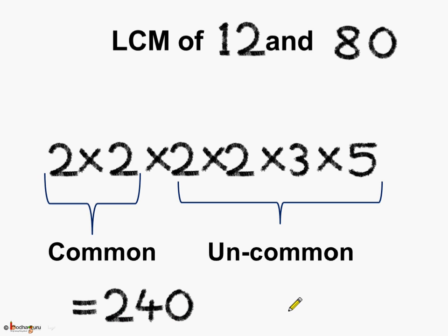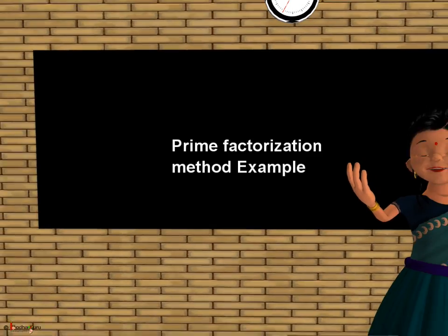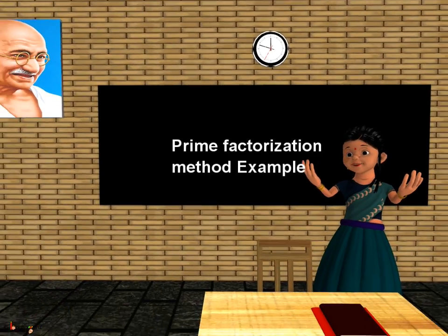So now you know how to find the LCM of given numbers using the prime factorization method. That is all for now. Bye-bye children.